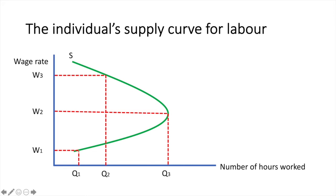Let's take some imaginary worker named David. At wage rate W1, David has decided it is more worthwhile to work than enjoy his leisure time. As he approaches W2, he continues to substitute work for leisure in the pursuit of a higher income. Above W2, increases in David's wage actually result in less work being offered, as he starts to value leisure time more than work.